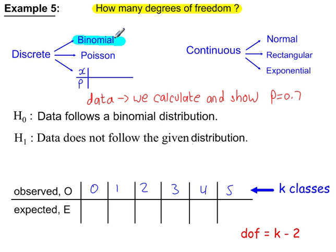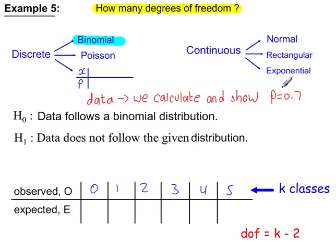Example 5: again we're working with the binomial distribution, but from the given data we've calculated P = 0.7. So in H0, we state that the data follows a binomial distribution, with no mention of P = 0.7 in our hypotheses — we're not testing that value. We're only testing whether the data follows the binomial distribution, because P is known from our calculations. This time it's k minus 2 degrees of freedom. With k = 6, that gives 4 degrees of freedom.